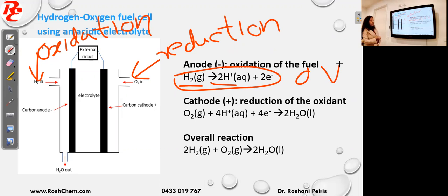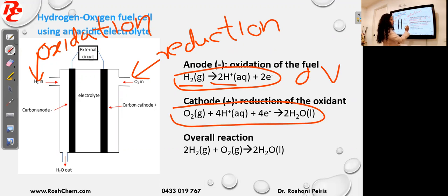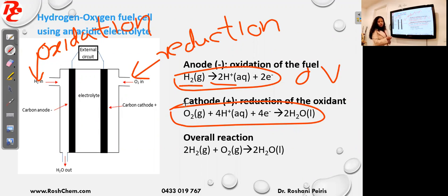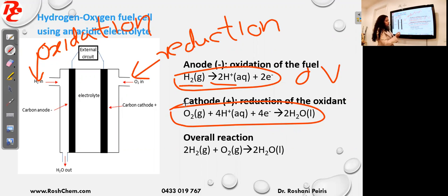The cathode reaction involves oxygen undergoing reduction. You can also find this reaction in the electrochemical series, where O₂ goes to water with four H⁺ and four electrons. You can also balance this equation using the KOHES method, which we discussed under redox chemistry. Then you add the two reactions together to get the overall reaction.